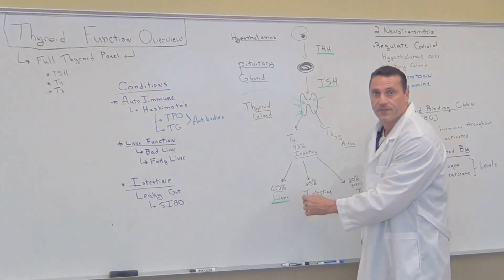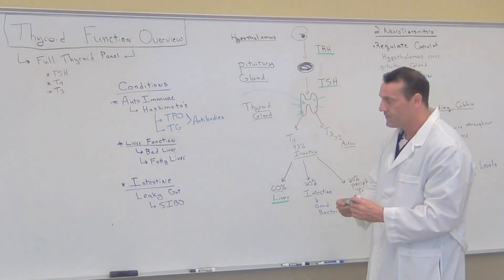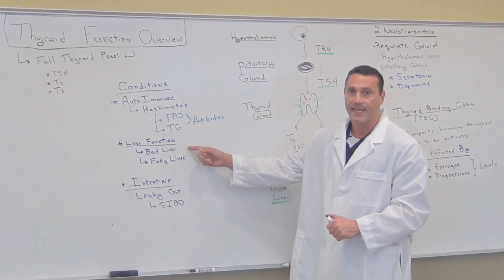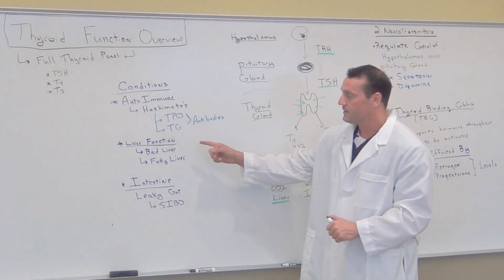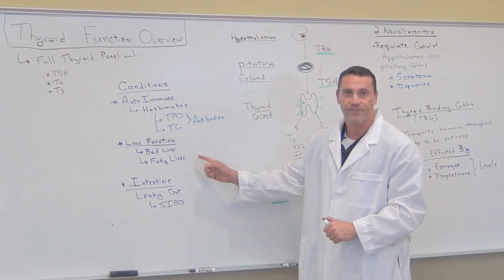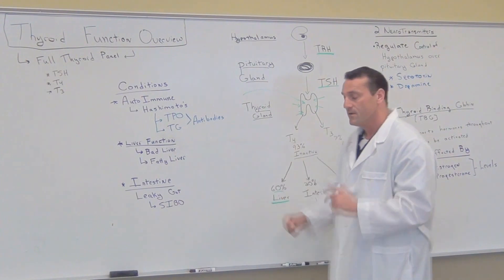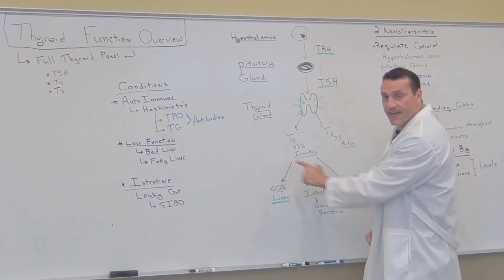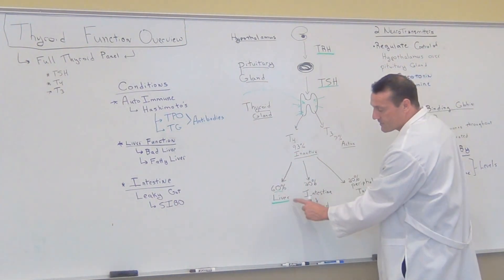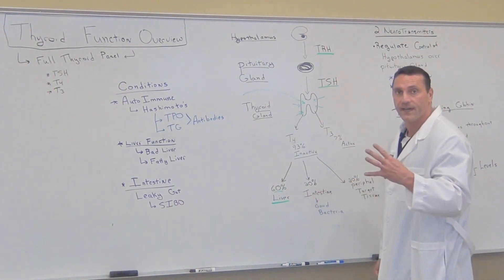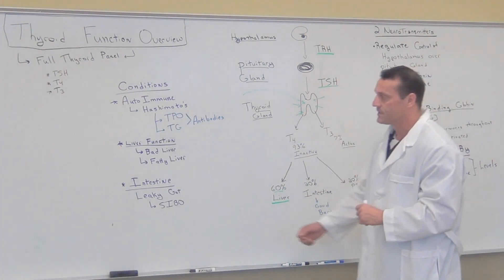Remember, 60% is converted in the liver. So if you have bad liver function due to medications, alcohol, or if you're having too much fat in your diet, which is what's going to happen, you're going to have a condition called fatty liver. Remember, 60% of that inactive T4 is converted in the liver. So you're going to have inactive T3 due to those conditions.